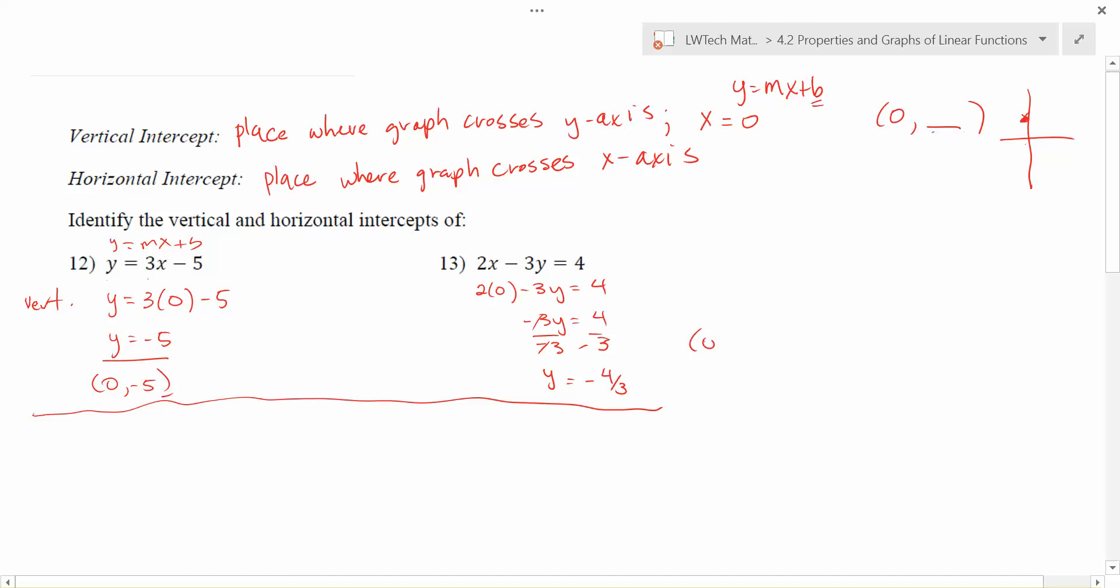So again, coming over here, the x-coordinate is always 0, and then the y-intercept is whatever you calculate it out to be. So in this case, our vertical intercept would be (0, -4/3).